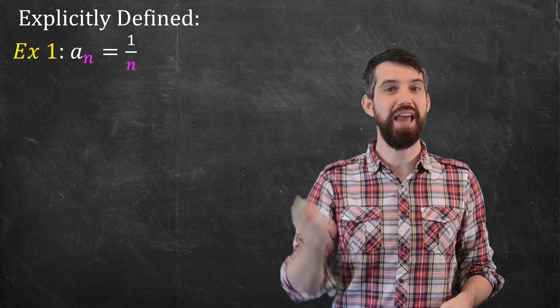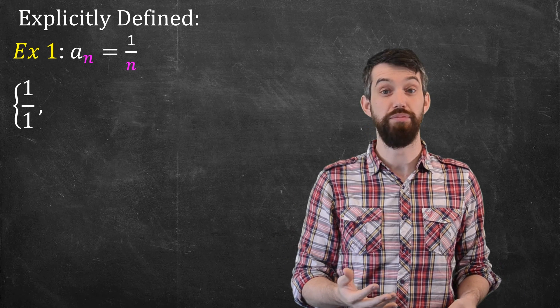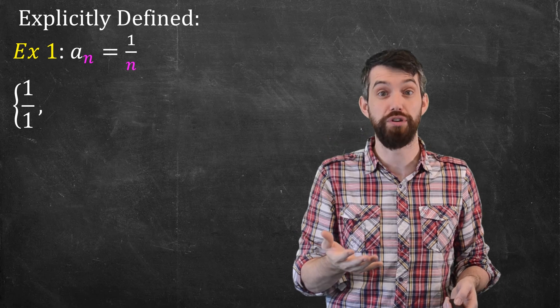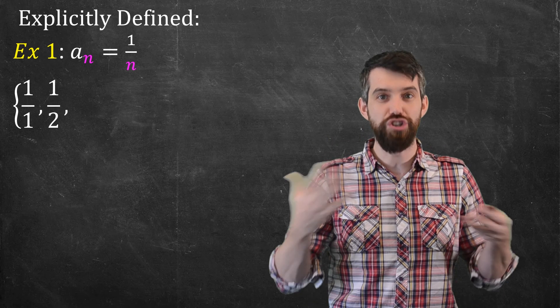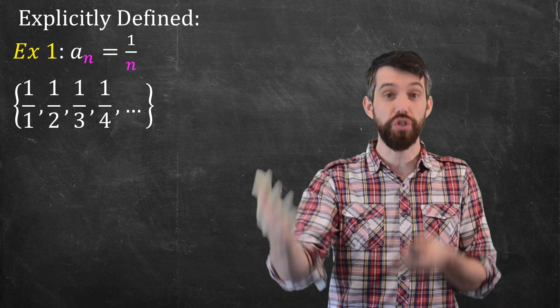So for example, if n is equal to 1, a_1 is 1 over 1. And if I put in 2, then a_2 is 1 over 2, so a half. And in general, it's going to be 1 third, 1 fourth, 1 fifth, 1 sixth, and so on.